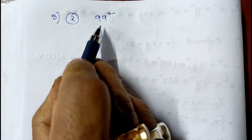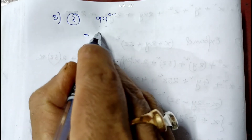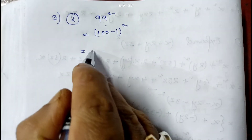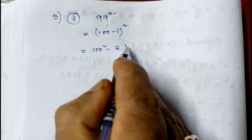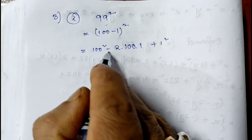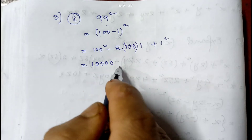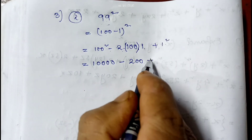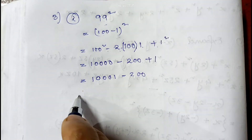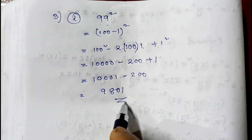In question number 3 first part, evaluate 99². We cannot directly multiply 99 × 99; we use an identity. Write 99 as (100 − 1)², so it is (a − b)² = a² − 2ab + b². Here a = 100 and b = 1, giving 100² − 2·100·1 + 1² = 10000 − 200 + 1 = 9801. So 99² = 9801, which is the required answer.